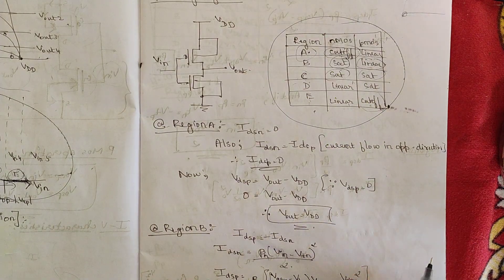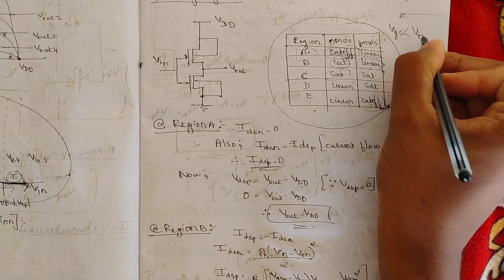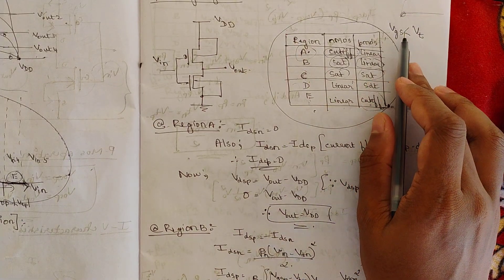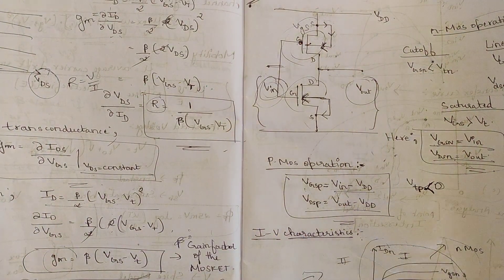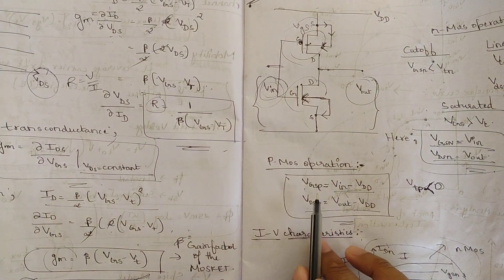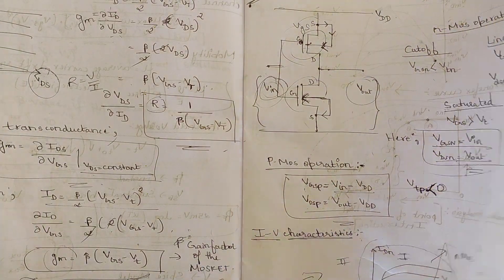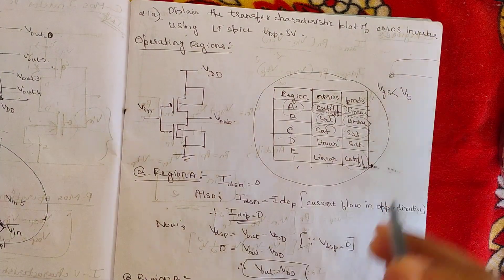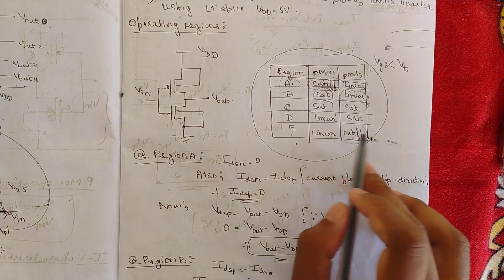For the PMOS transistor, we already have the relation VGSP = VIN − VDD. Since VGSP must satisfy VGS < VT for linear operation, and in region A VIN is near 0 making VGSP very negative (less than VTP), the condition is satisfied — confirming PMOS is in linear region in A and, by symmetry, NMOS is in linear region in E.